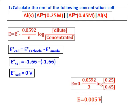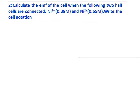In a concentration cell, remember that electrons as usual go from anode to cathode — the anode has the dilute concentration and the cathode has the concentrated concentration. Now, calculate the EMF of the cell when the following two half cells are connected: nickel ion with a concentration of 0.38 molar and another nickel ion with a concentration of 0.65 molar. Also write the cell notation.